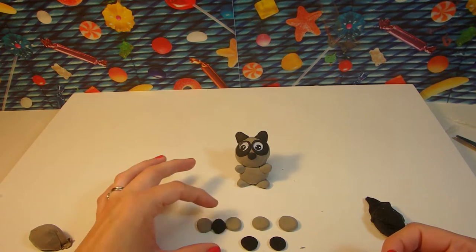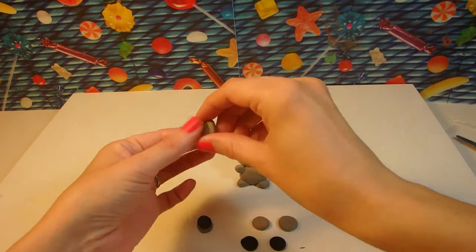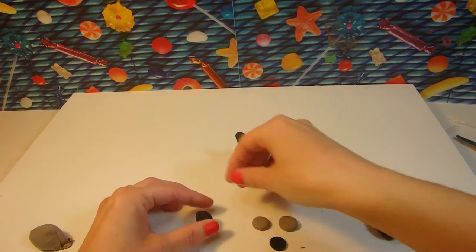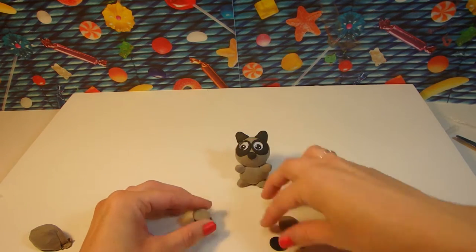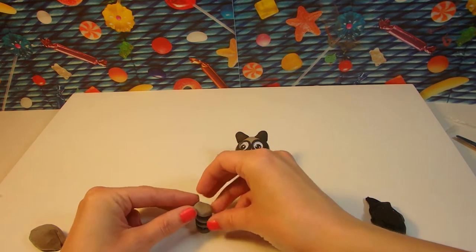Now we're going to stack it up like we're making a really tall hamburger. Alternating grey and black. Grey, black. Grey, black. And one more grey on top.